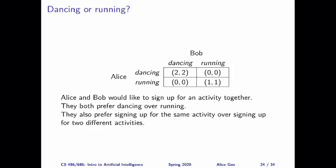In this game, Alice and Bob are choosing between signing up for one of two activities: dancing or running. They both prefer dancing over running. You can see from the utility matrix that their utility for dancing are both higher, but they also prefer signing up for the same activity over signing up for two different activities, because everything is more fun when you do it together.